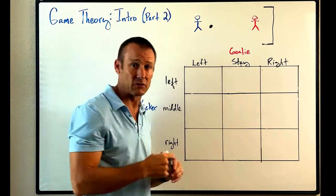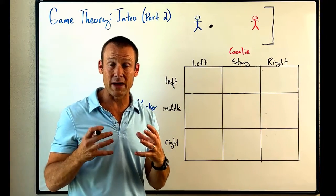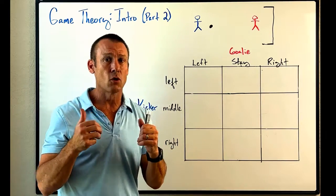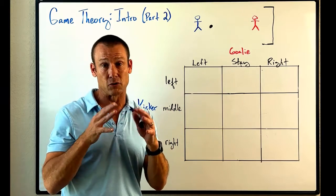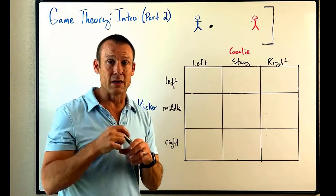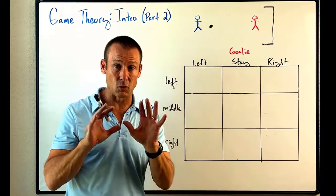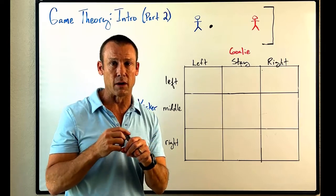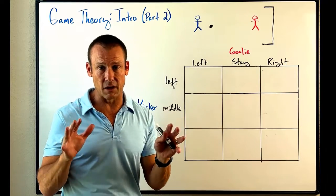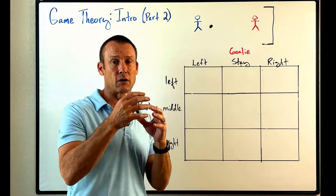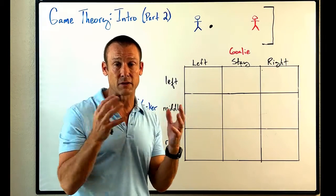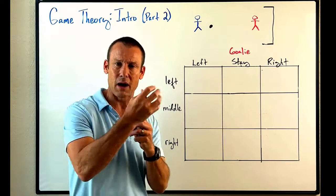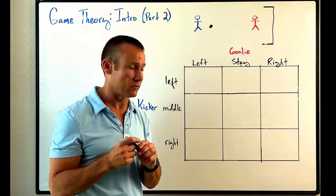Now we've got to fill in the payoff matrix. Here's the rule: if the kicker kicks the ball into the goal, the kicker gets a point — a util — and the goalie gets zero. If the goalie saves it and blocks the ball, the goalie gets the util and the kicker gets nothing. The goalie doesn't literally get a point, but it's a positive payoff for them.